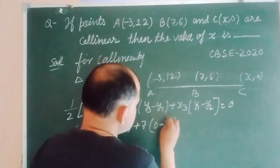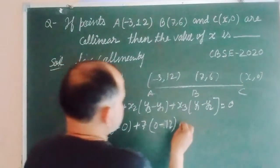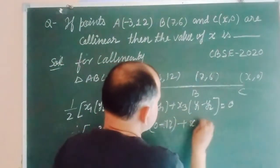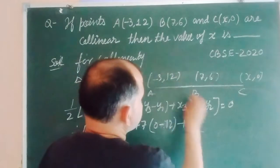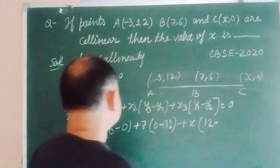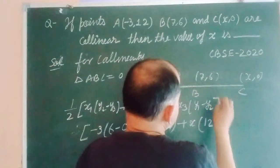Plus X3, X3 is x, and Y1, Y1 is 12, minus Y2, Y2 is 6, equal to 0.